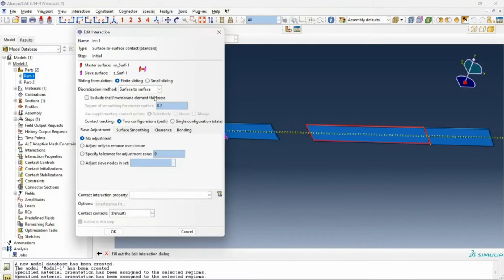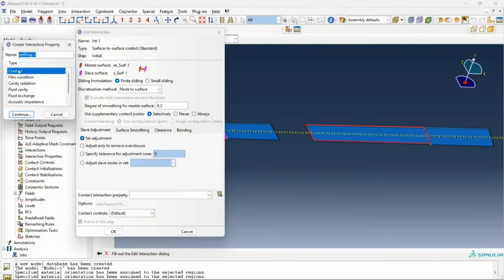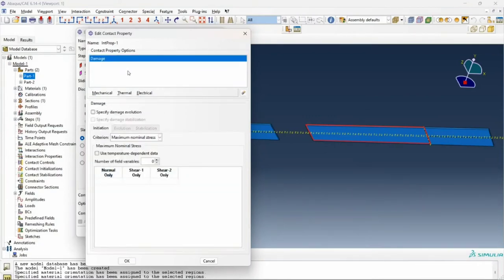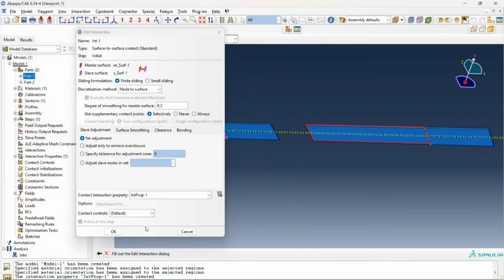Now here we need to do two things. The first is to choose my discretization method as node to surface so that the surface of the master is modeled against the nodes, the individual nodes of the slave, and we can model separation more accurately. The second is to define a contact interaction property. The type is going to be contact, and we'll define two types of properties. The first will be damage, which is essentially the stress at which my bonding no longer works.